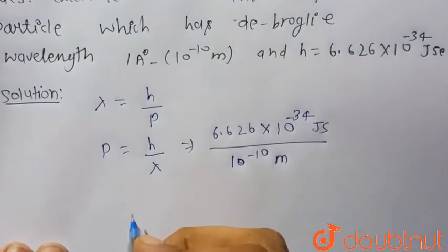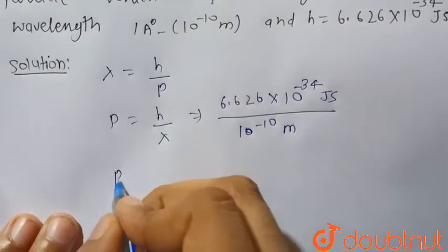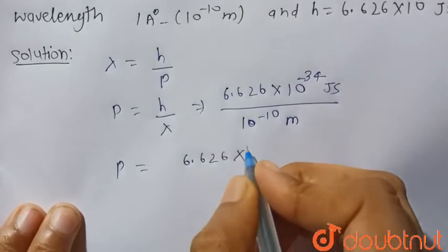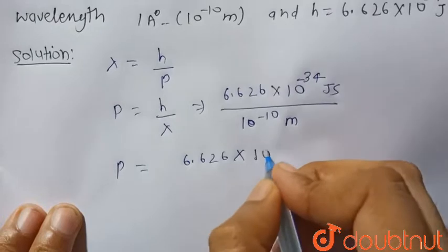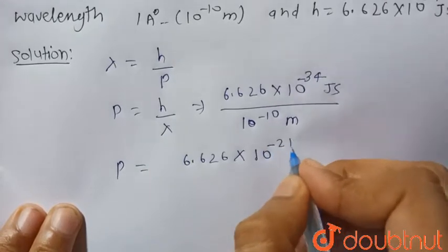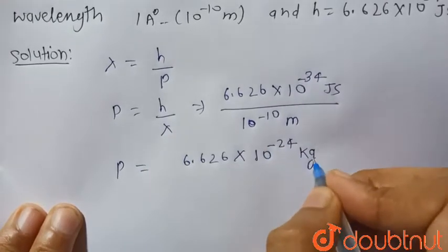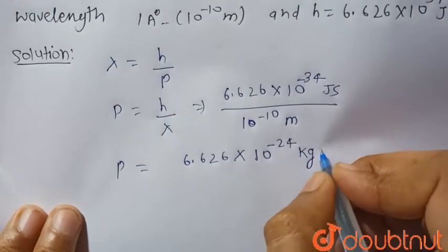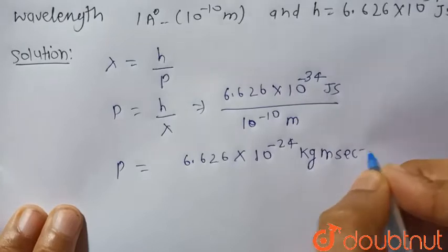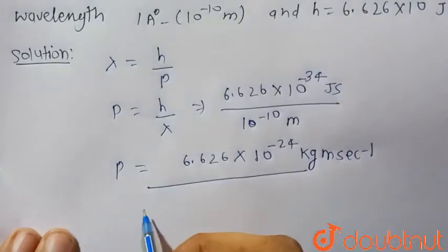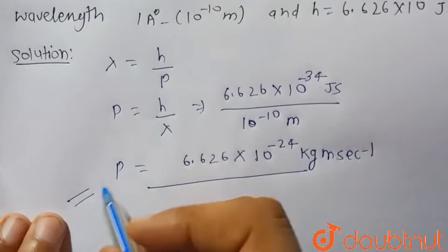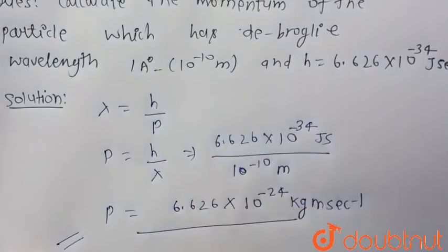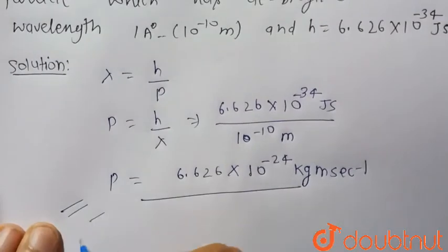So after calculation, we will get the value of momentum is equal to 6.626 into 10 to the power minus 24, and we know that the MKS unit of momentum is kilogram meter per second. This is the required value of the momentum of the particle whose wavelength is 1 angstrom. So this is our final answer.